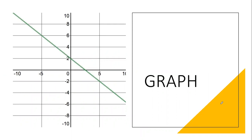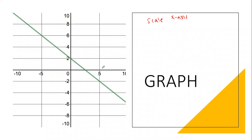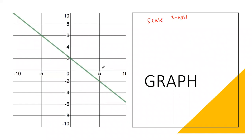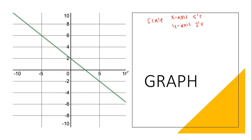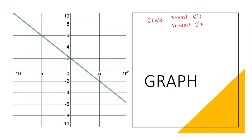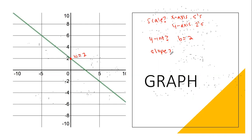This one looks a little wonky. What is the scale of the X-axis? Fives — the X-axis is going by fives. And the Y-axis is going by twos. I'll keep that in mind when doing my slope. Juan Carlos, what's the Y-intercept? The Y-intercept is b equals two — there's where it hits the Y-axis. Is my slope positive or negative? Negative.